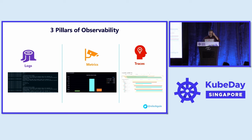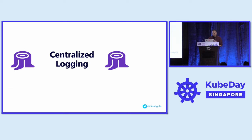As we heard in the morning sessions, there are three pillars of observability: logs, metrics, and traces. That is what we will see in this session as well — how we can use open source tools to incorporate these three things with Kubernetes.